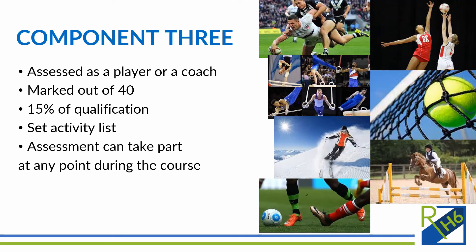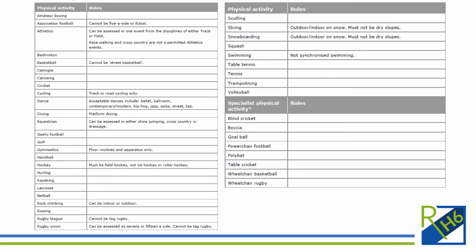Component three is your practical assessment — you have one sport that you are marked out of 44. There is a set activity list so you can only submit a sport that is on that list by the exam board. Assessment can take place at any point in the course, so if you know that you're going to be skiing over the new year you can record yourself, produce your footage, we can assess that and then that part of the course is done and you can focus on the theory. There's quite a variety on the sport list, though there are some rules — for example, football cannot be five-a-side or futsal, it has to be full 11-a-side games. You can check through the list and see what would suit you best.